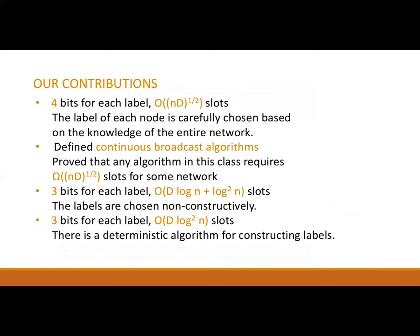My paper with Seth this year has four main contributions. First, we give a deterministic radio broadcast algorithm using four bits for each label, which completes within O(√(Nd)) slots. This is better than the algorithm in the SPAA 2018 paper when d is o(N). Then we define the class of continuous broadcast algorithms, which includes both of these algorithms, and prove that any algorithm in this class requires Ω(√(Nd)) slots for some network — so our algorithm is optimal in this class. Third, we came up with a different algorithm that is not in this class. It uses only 3-bit labels and completes in O(d log N + log²N) slots, which is better than any continuous broadcast algorithm if d is o(N / log²N).